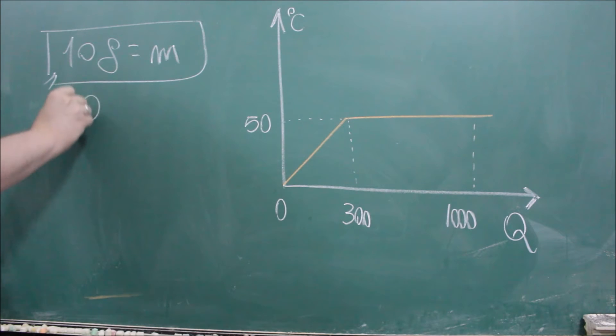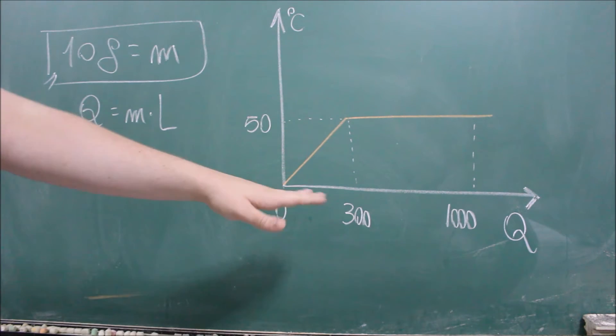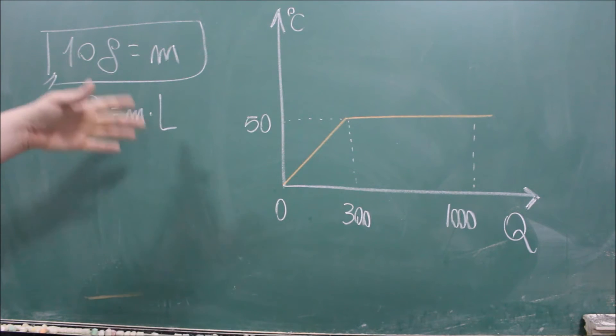Estou lembrando que o calor latente é Q=mL. Onde Q é a quantidade de energia, que é o que está no eixo X. M é a massa do objeto. E L é o calor latente de mudança de fase, ou a constante. Tudo bem. Então a gente vai só utilizar essa fórmula.